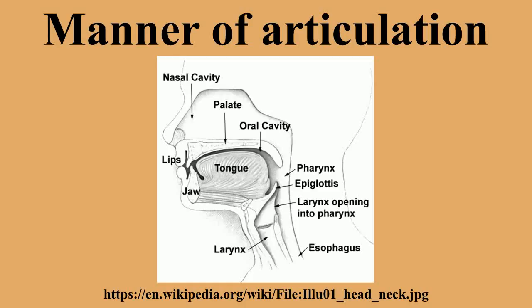Nasal (nasal occlusive): Where there is occlusion of the oral tract but air passes through the nose. The shape and position of the tongue determine the resonant cavity that gives different nasals their characteristic sounds. Examples include English M, N. Nearly all languages have nasals, the only exceptions being in the area of Puget Sound and a single language on Bougainville Island.